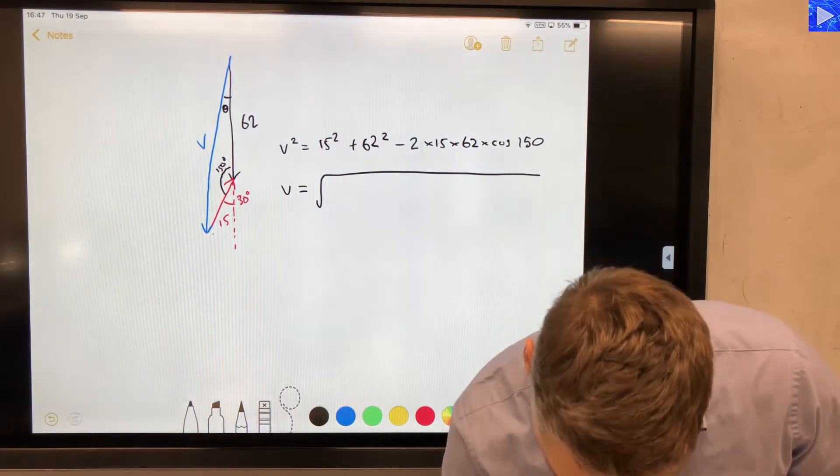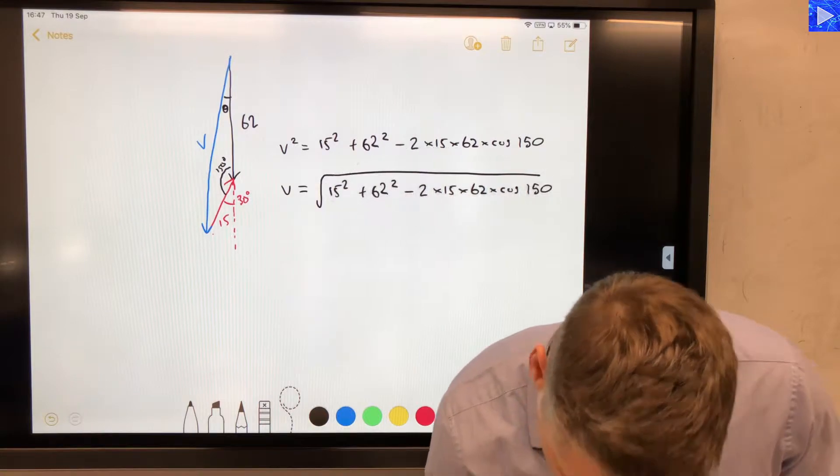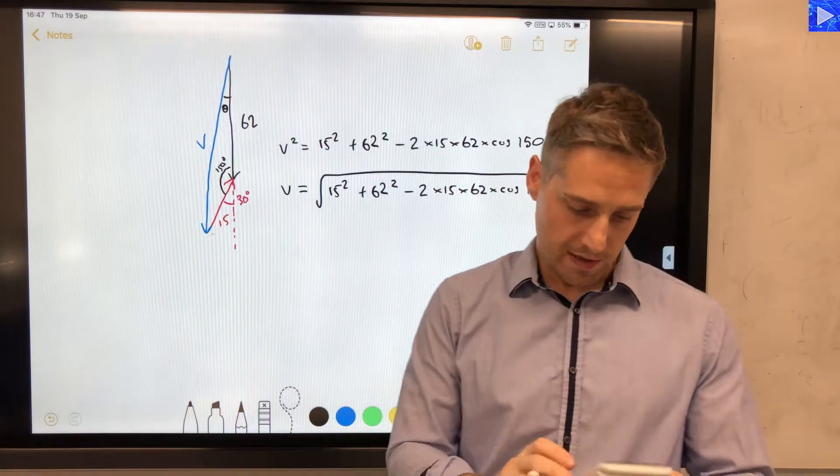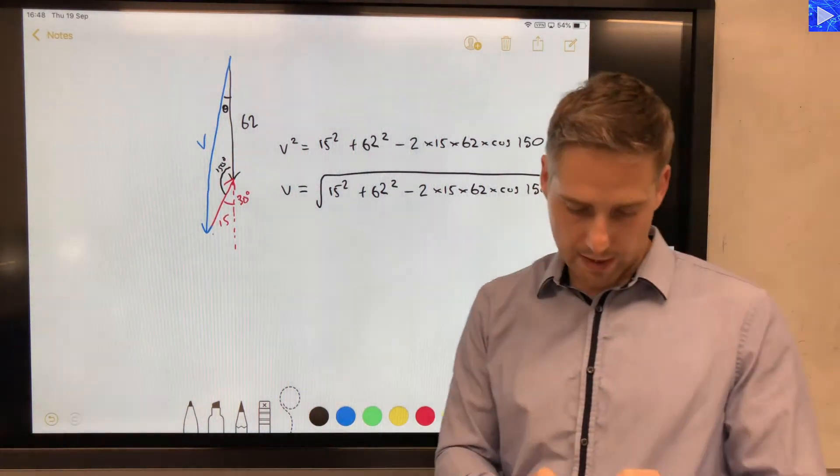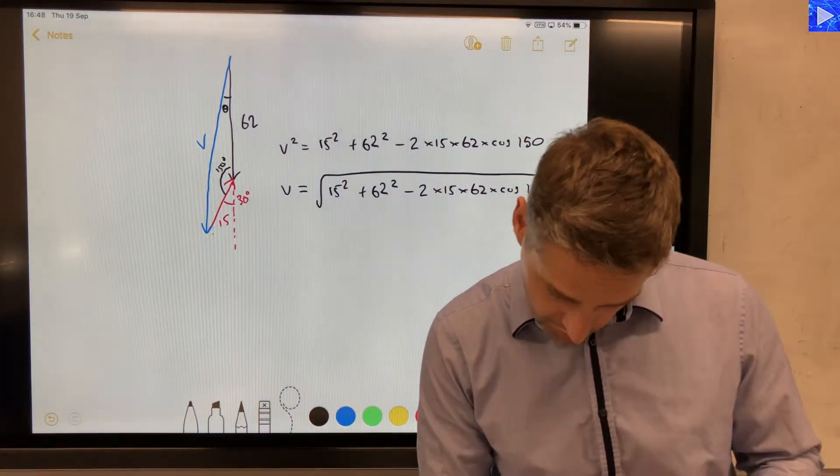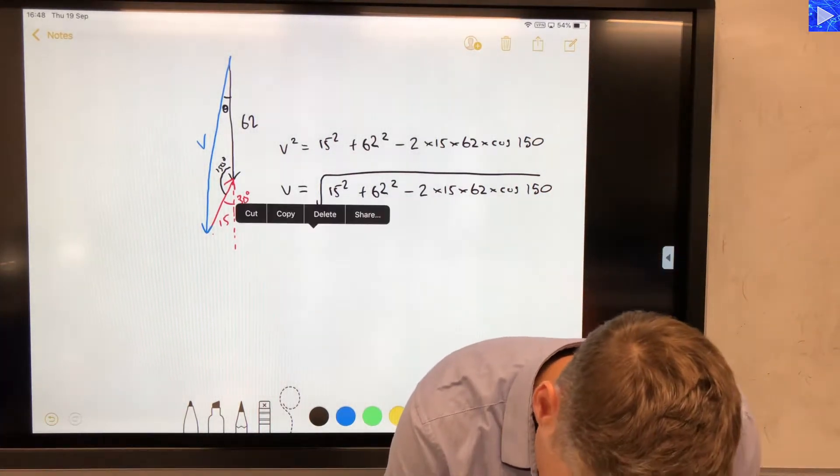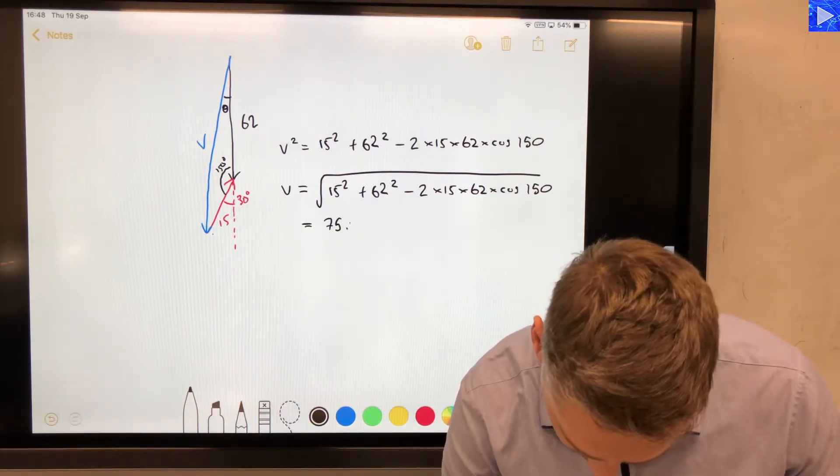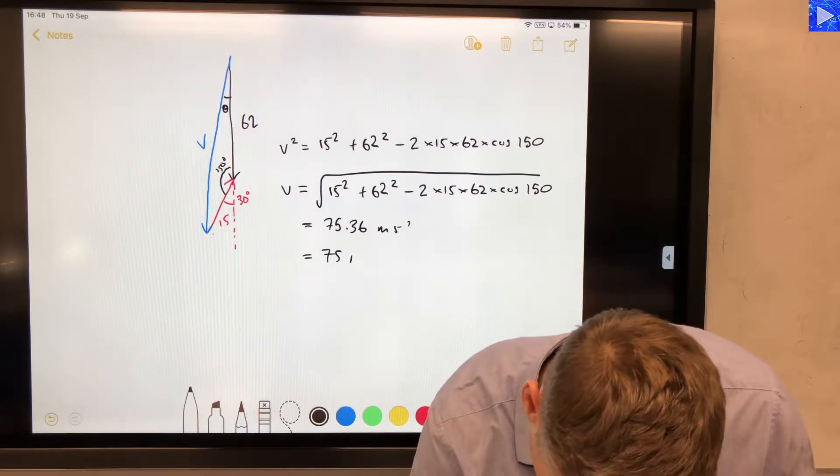So all this bit here, in fact I can just simply copy that and stick that one in there. There you go. So yeah, when you do this, if you're doing two steps, don't forget to do the square root at the end. Okay, so I'm going to do that all in one go. 15 squared plus 62 squared minus 2 times 15 times 62 times cos of 150. And that gives me, oops, switch back to pen, equals 75.36 meters per second. So 75 to 2 significant figures.